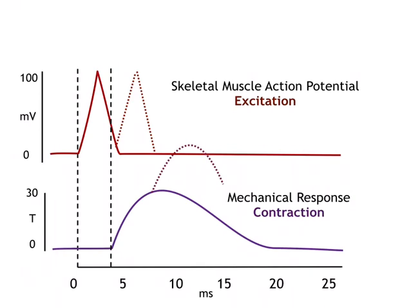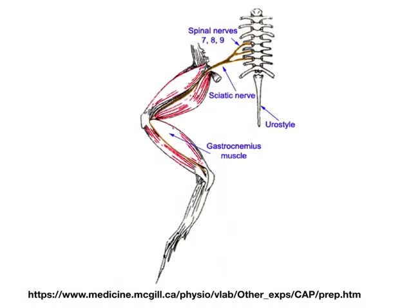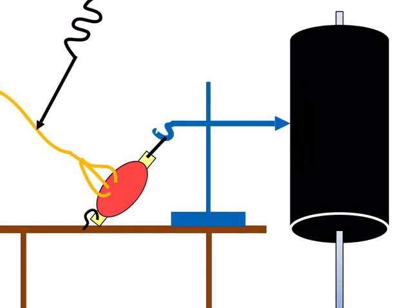Hence, skeletal muscle can be tetanized. Let us see what that means. This is a frog's gastrocnemius muscle preparation. You can see the sciatic nerve. This is a classical kymograph recording in which the sciatic nerve is stimulated, which causes the muscle to contract, which will pull a lever. And this lever is writing on this black drum.